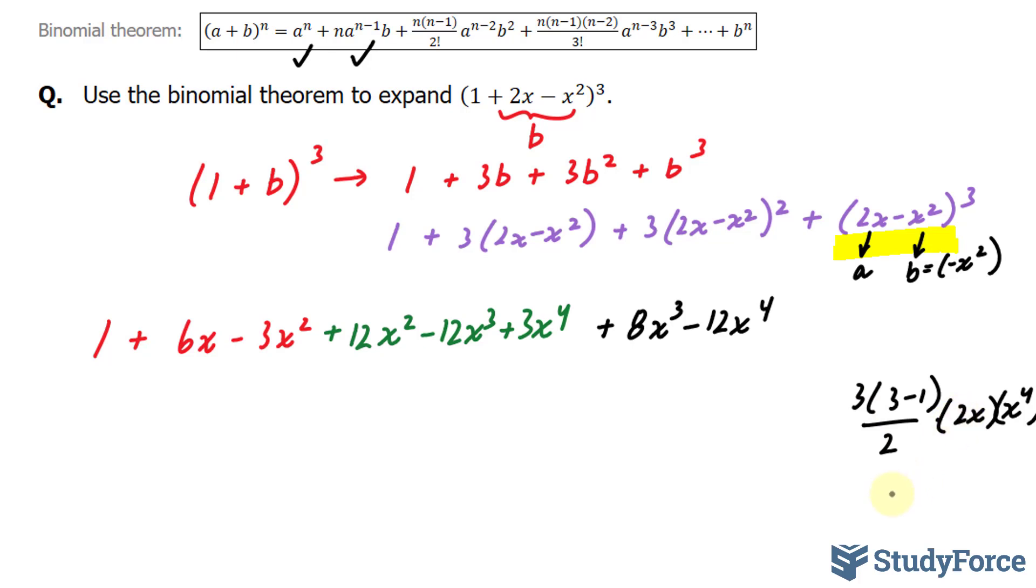3 times 2 is 6, x⁵. That's our next term: plus 6x⁵.